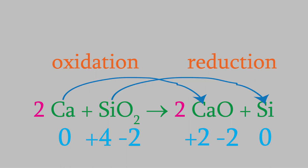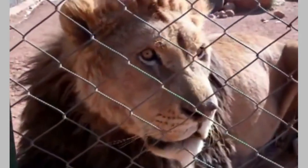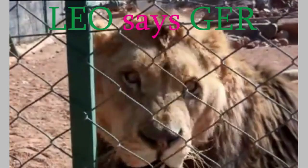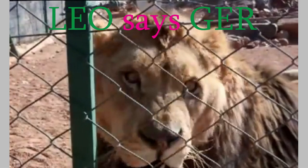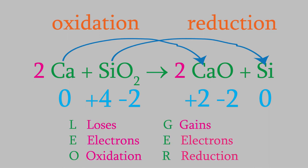Some people have a hard time remembering the difference between reduction and oxidation, so here's an easy way to keep them straight. Leo the lion says GER. That's LEO — L-E-O — which stands for 'loses electrons, oxidation.' And GER — G-E-R — which stands for 'gains electrons, reduction.' So in our reaction, the calcium lost electrons, so it was oxidized, and the silicon gained electrons, so it was reduced.